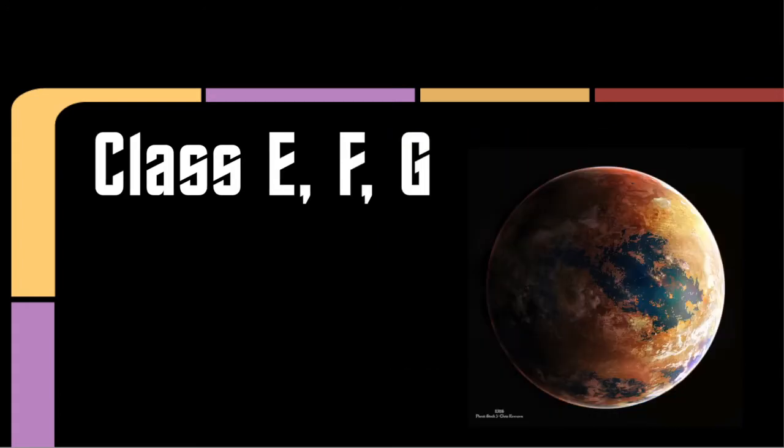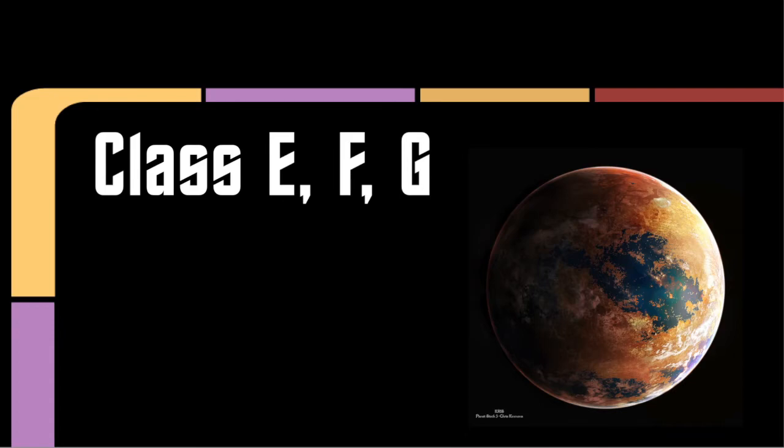Classes E, F, and G planets are simply described as proto-Earth-sized planets. Whatever that means. Class H planets are described in Memory Alpha as generally uninhabitable. They're incredibly hot and arid, like Vulcan, but to the power of Arizona types you buy.